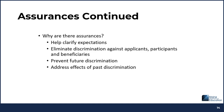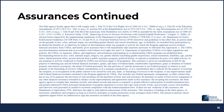Why are there assurances? They help clarify expectations, eliminate discrimination against applicants, participants, and beneficiaries, prevent future discrimination, and address the effects of past discrimination. Here is the assurance language that you will find in the agreements that you have with the state agency as sponsors. This assurance language must be used as part of the civil rights assurances requirements.